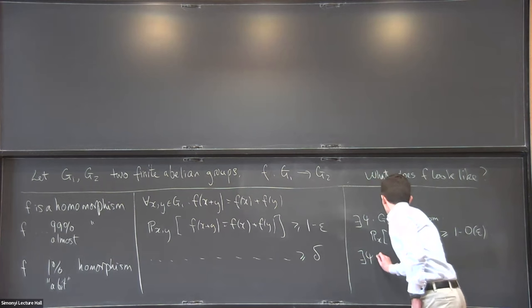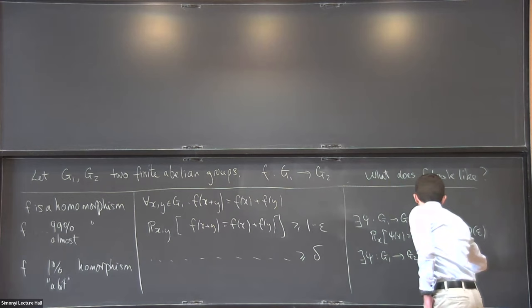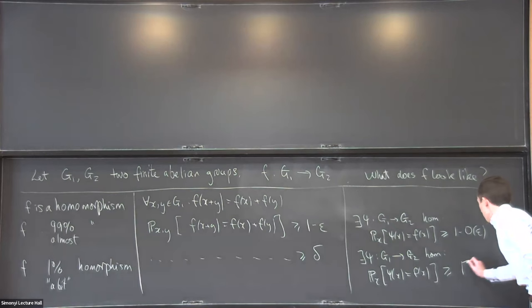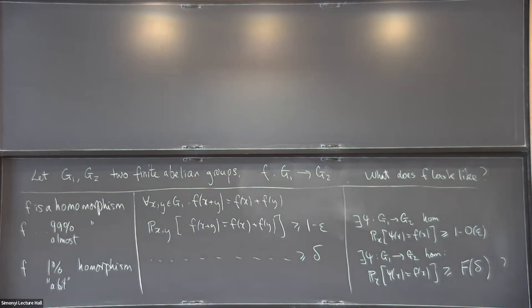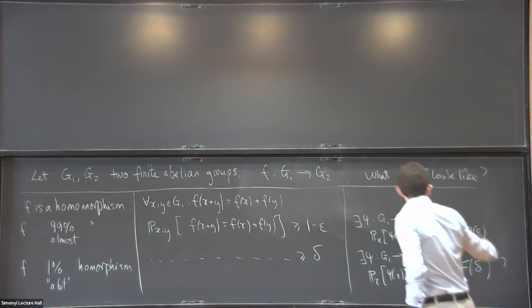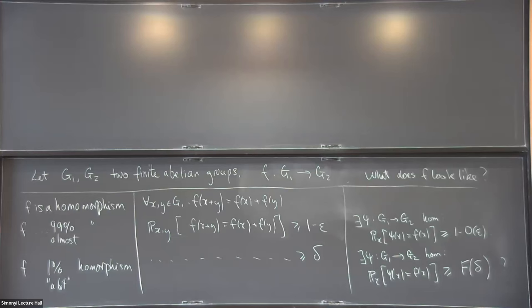It's natural to ask in the 1% case: if you're a little bit of a homomorphism, do you agree with a genuine homomorphism a little bit of the time? Is that the only way it can happen? As it happens, you can get a linear bound. With all the weapons of modern additive combinatorics at our disposal, we have nothing to fear from this question. There are two different proofs — one combinatorial — and they're both non-trivial, though most can fit on a couple of pages.